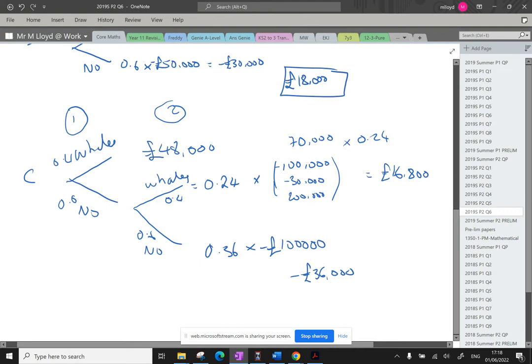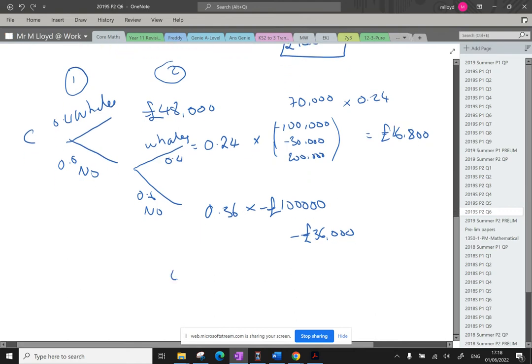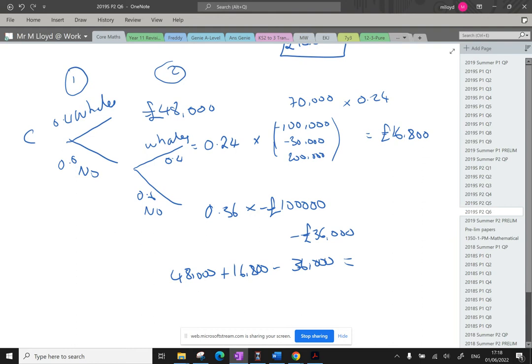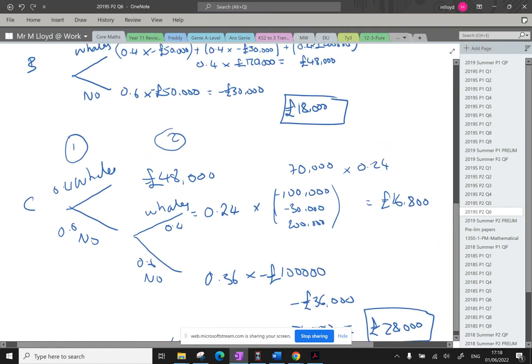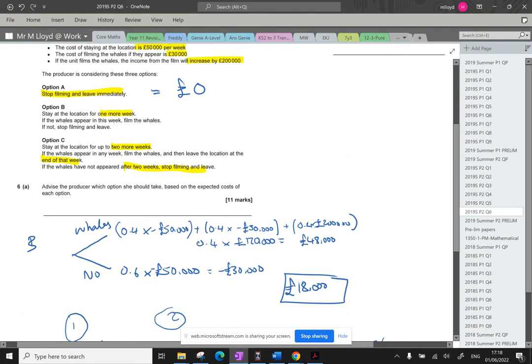Then all of these three outcomes need to be added together. So we've got the 48,000. We've got to add the 16,800. And then we subtract the 36,000. I'm going to run that through my calculator. 48,000 plus 16,800 take away 36,000. Overall, that gives us £28,000. So that is the highest one.